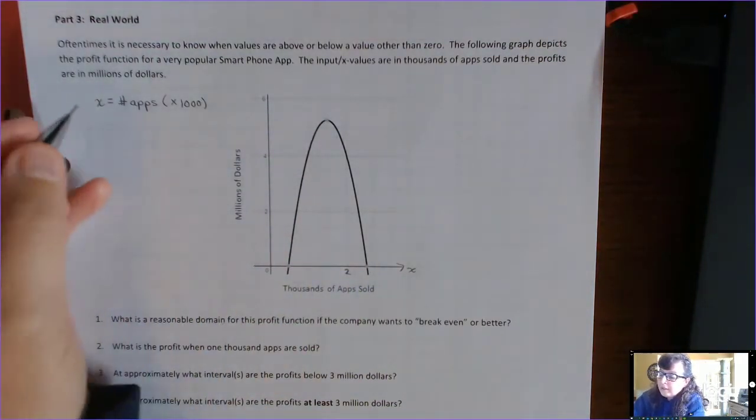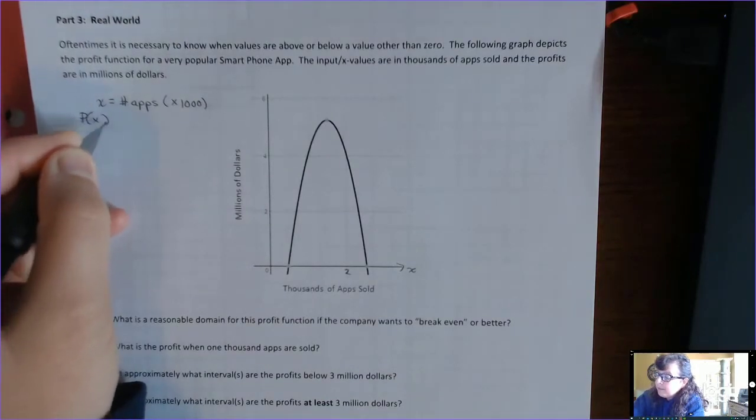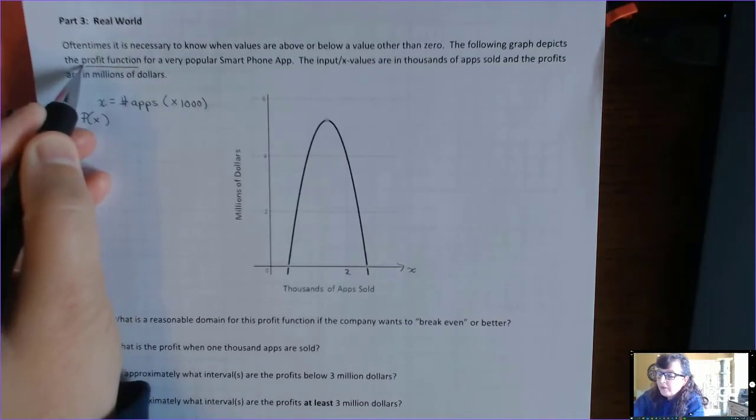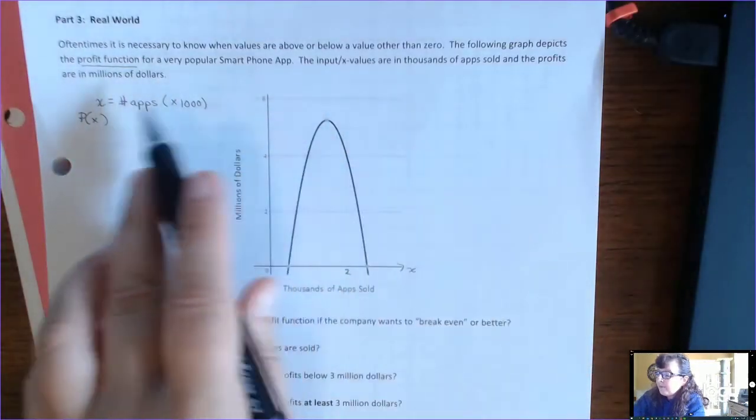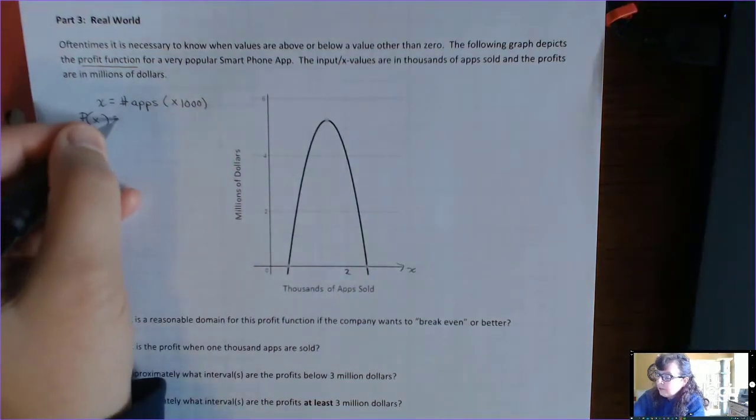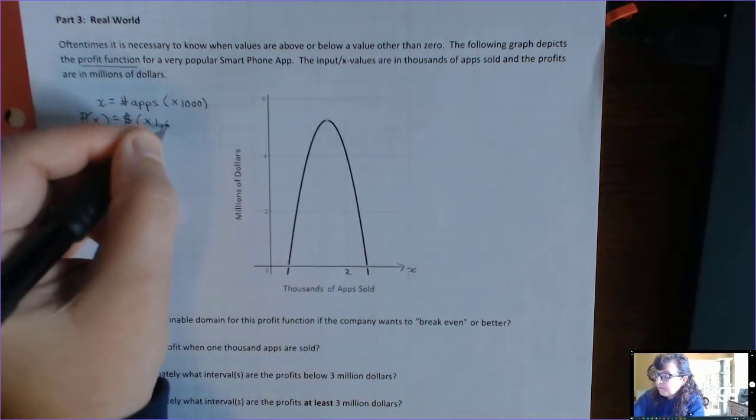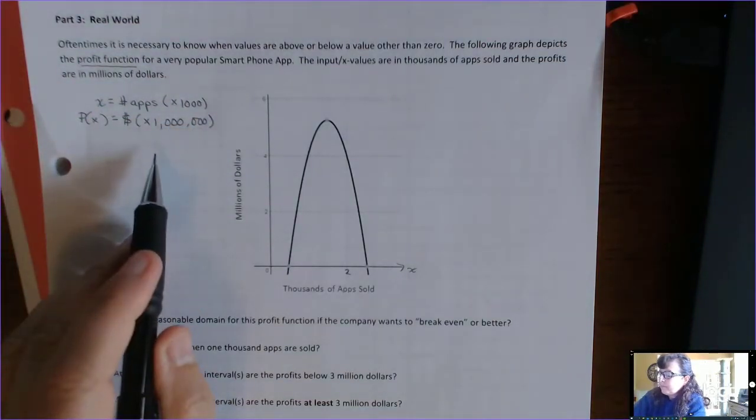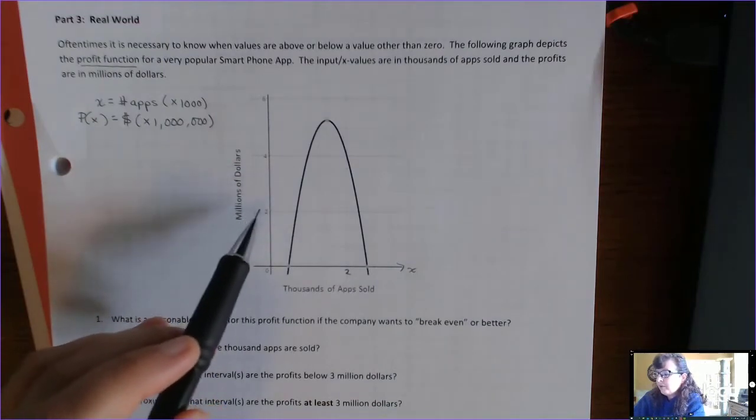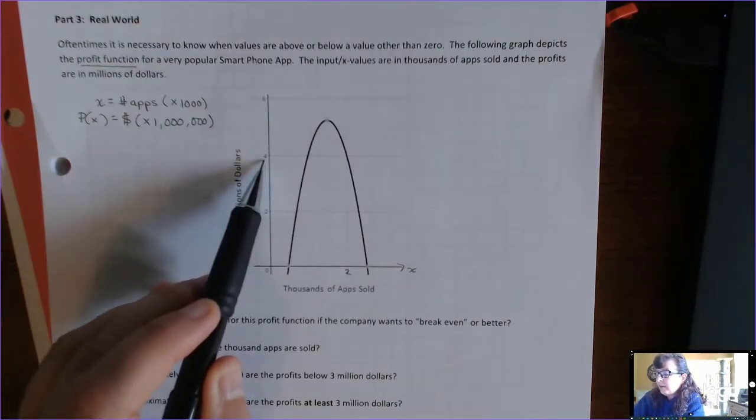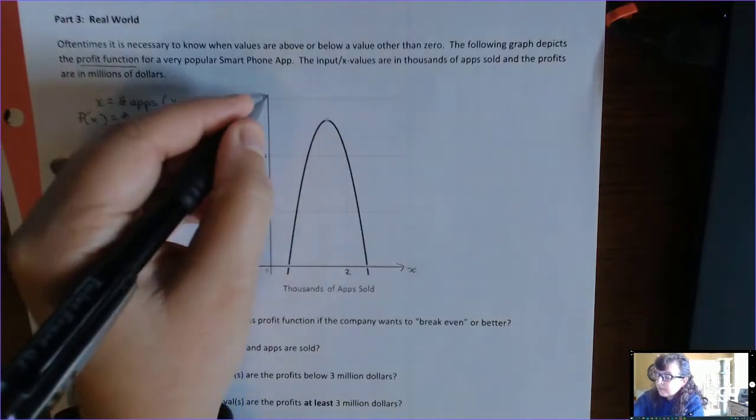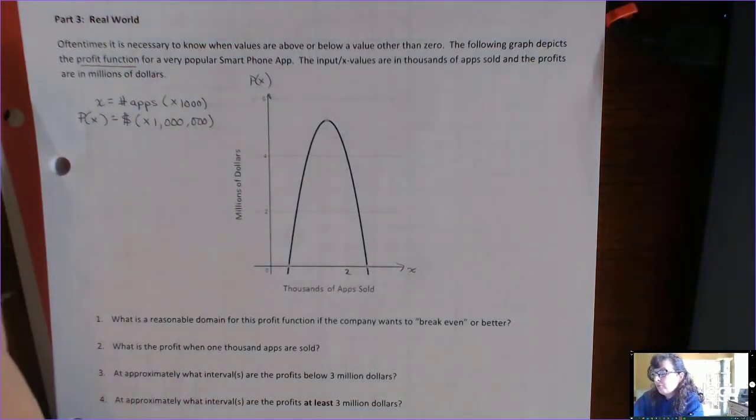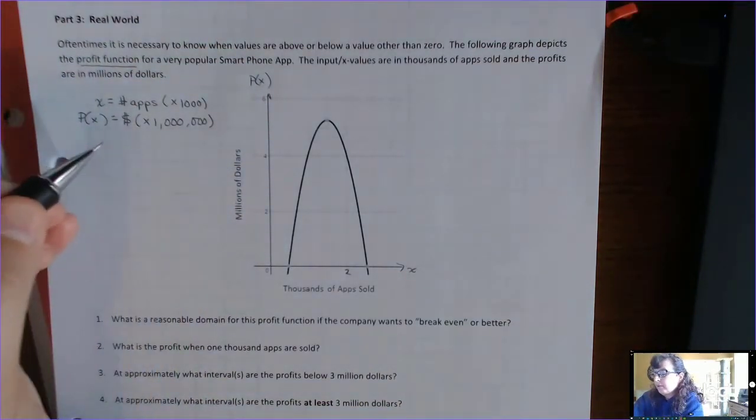Alright, and then our output, I'm going to use function notation, is P of x. It's the profit. It's the function. The name of the function is a profit function and it says that the profits are in millions of dollars. So, this is dollars times a million. So again, anytime you're working with word problems, when you're working inside the function or inside the graph, the numbers are smaller sometimes. So, this number on the y axis, which represents profit in millions of dollars, is 4. But when you interpret, that's interpreted as 4 million dollars.